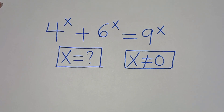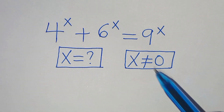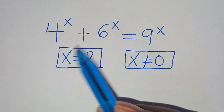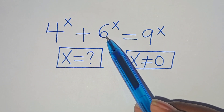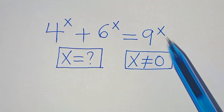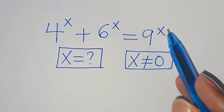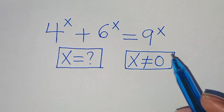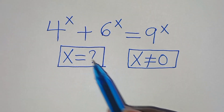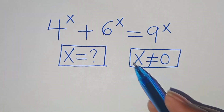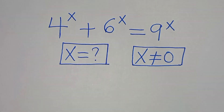Hello everyone, you are welcome to solve this nice exponential problem, which is 4 to the power of x plus 6 to the power of x equals 9 to the power of x. What is the value of x, given that x is not equal to 0?